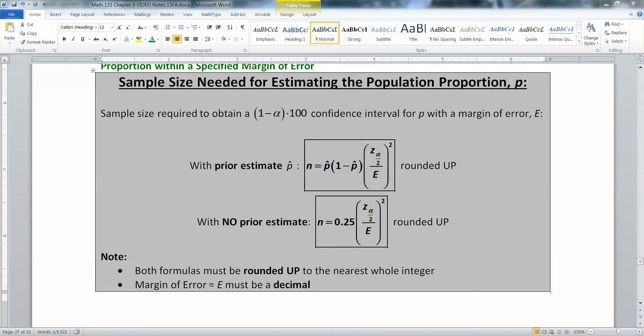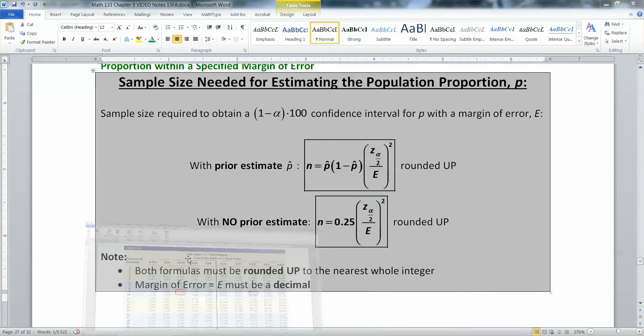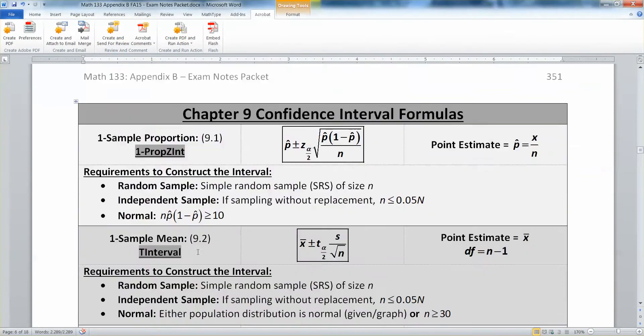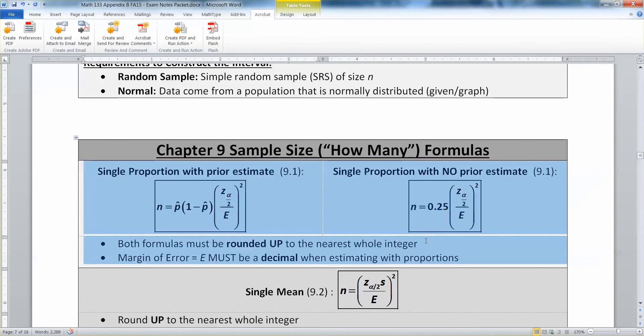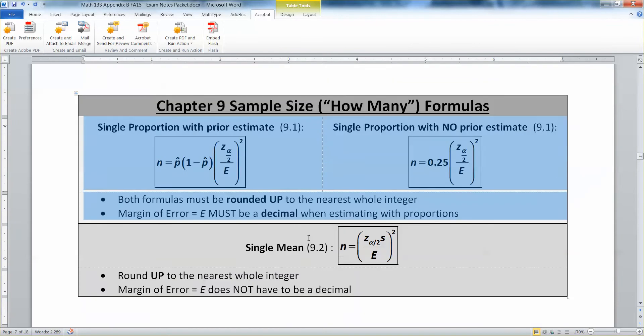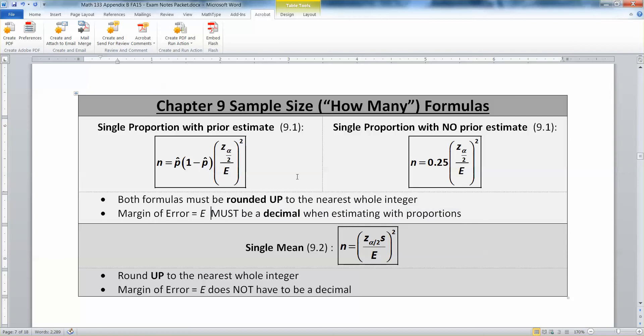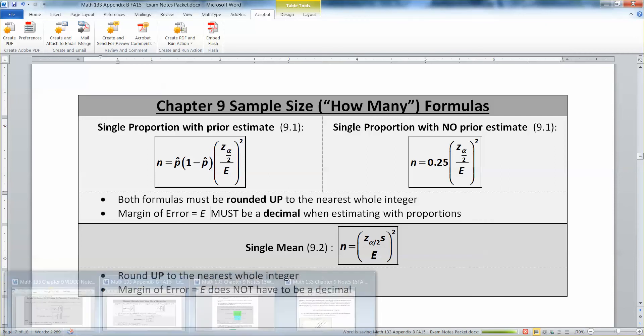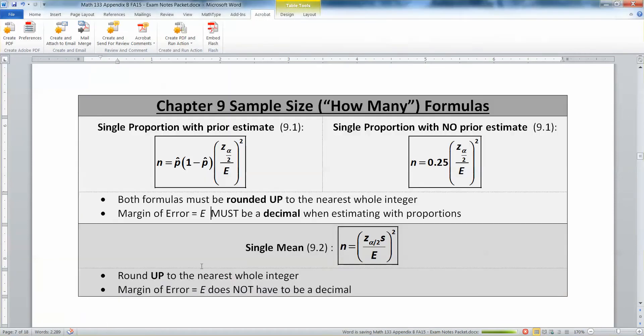As with most cases, you don't need to memorize the formula because both of them are right here, and I even tell you what you need. They must be rounded up, and the margin of error must be a decimal. So when you're working with proportions, they've got to be decimal values for your error. Let me get back to the functions.